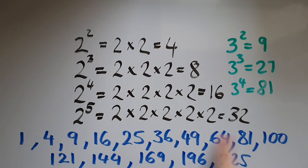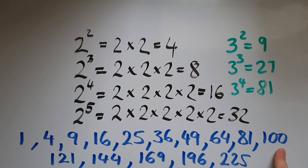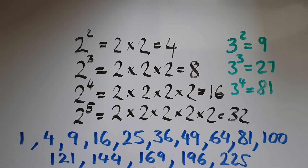You'll need to know all of these by heart. Many are part of the times tables up to 100 or 144, depending on which times tables you've been using. The squares of 13, 14, and 15 — which is 225 — are numbers you need to know as well.